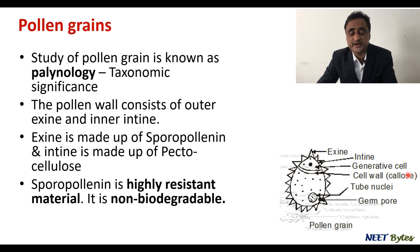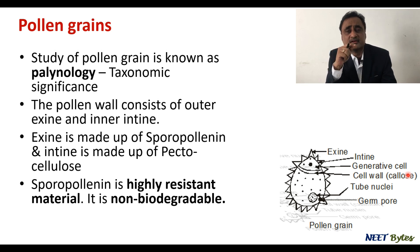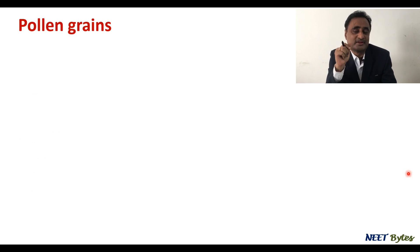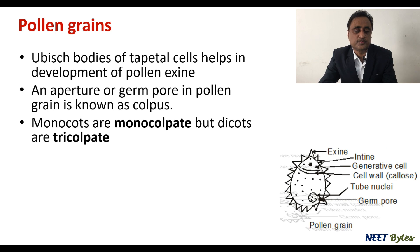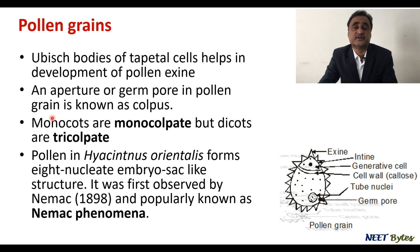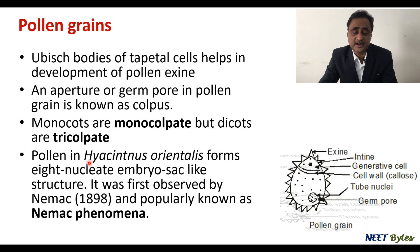The generative cell has a cell wall made of callose. Within any plant cell, the cell wall of a cell within another cell is always made of callose. Ubisch bodies help in the development of pollen exine. An aperture called germ pore is found on pollen grains. In dicots, the number of germ pores is three — so they are called tricolpate. In monocots, there is only one colpus — so they are monocolpate.